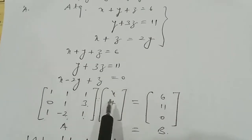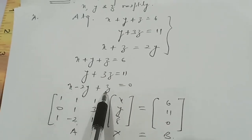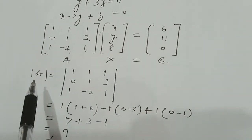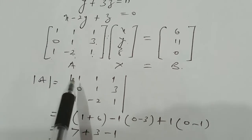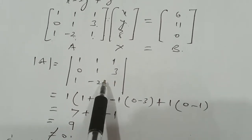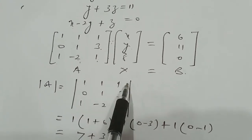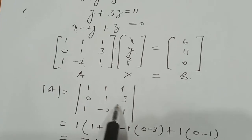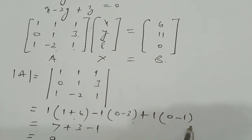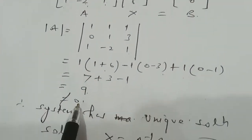We write this system in matrix form as AX = B. Computing determinant A by expanding along the first row: 1×(1+6) − 1×(0−3) + 1×(0−1) = 7 + 3 − 1 = 9, which does not equal zero. Since determinant A ≠ 0, the system has a unique solution, and the solution will be X = A⁻¹B.